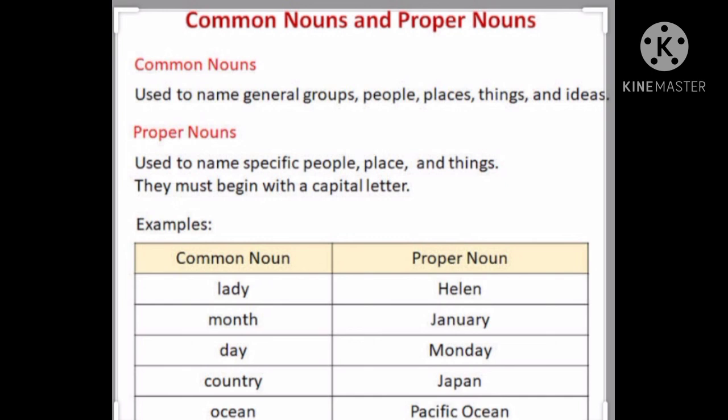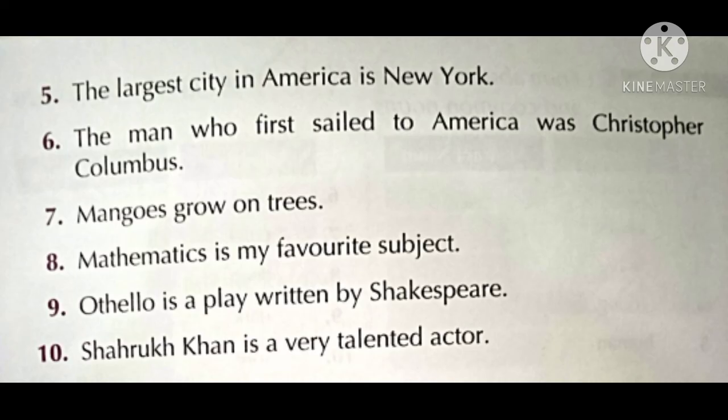So, this is your homework. Exercise 2: encircle the common noun and underline the proper noun in the following sentences. Like the first sentence: Hari Parsat is an intelligent student. In mein aapko kya karna hai — jo common noun hai unko circle karna hai, aur proper noun ko underline karna hai. In this sentence, Hari Parsat is proper noun — isko underline karna hai. And student is common noun — isko circle karna hai. This is your homework, Exercise 2, from your booklet.